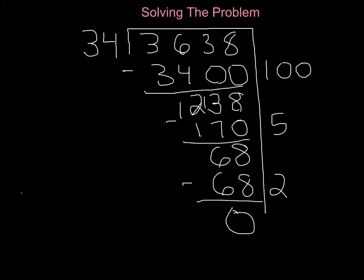Let's start and solve the problem using partial quotients. First you have to find out how many times 34 can go into the number 3,638.